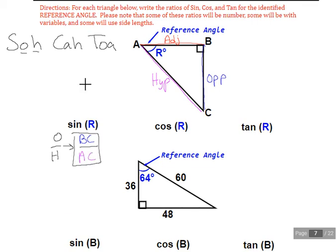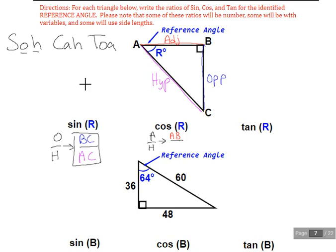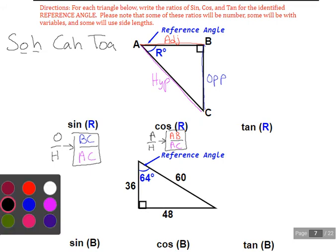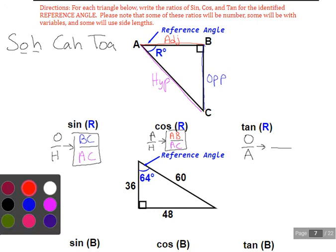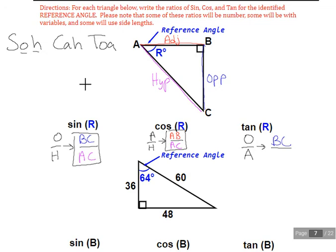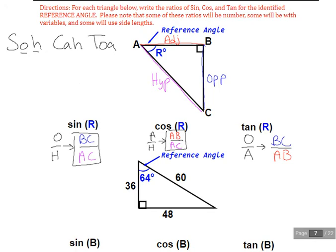Cosine, I didn't leave myself so much room here, but this is going to be A over H. So adjacent to angle R is going to be side AB, and then hypotenuse is AC. Tangent, opposite over adjacent. For reference angle R, the opposite side is going to be BC, the blue side, and then adjacent is our red side, AB. And so no matter what format of the triangle we give you, please be prepared to offer us sine, cosine, or tangent ratios based on your knowledge.